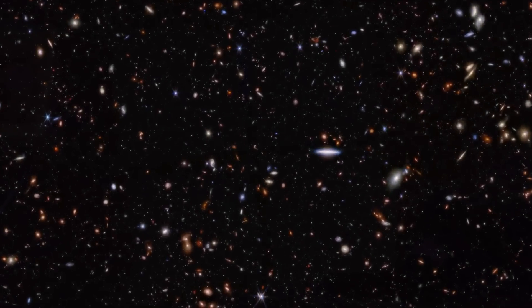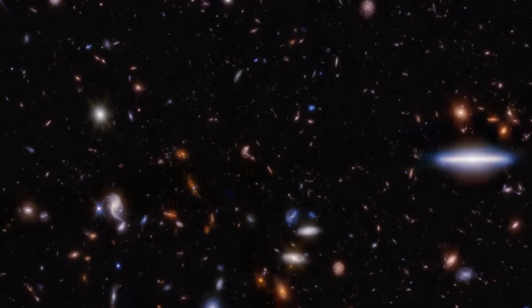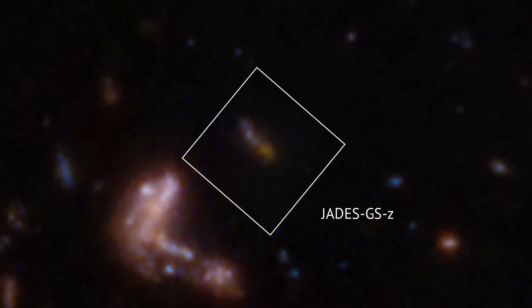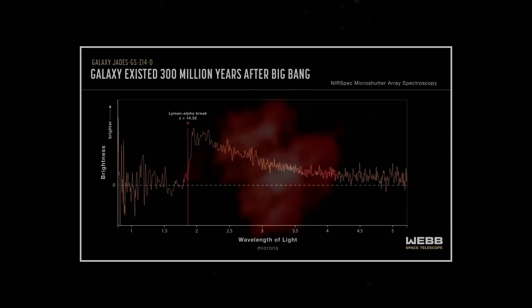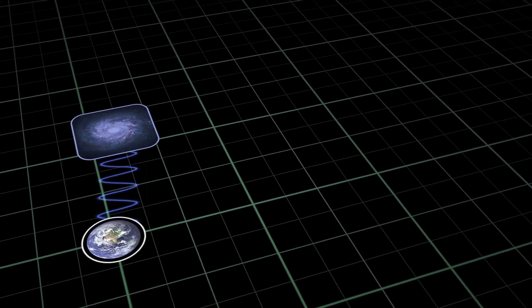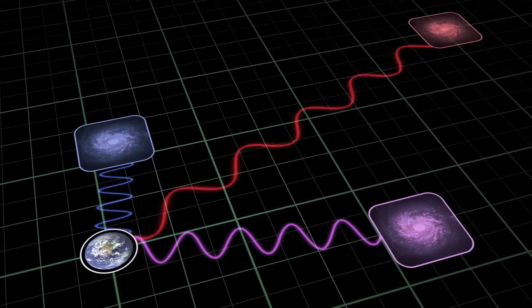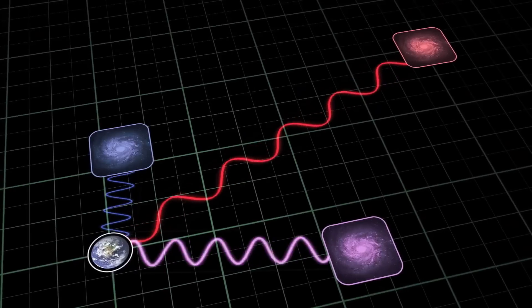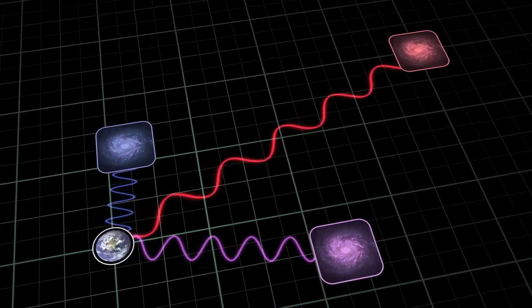In one of JWST's early campaigns, a galaxy named JADES-GS-z14-0 was found. It held the record for the most distant confirmed galaxy with a redshift of 14.32. Redshift, in a nutshell, is how much the light from a galaxy has been stretched by the expansion of the universe. The higher the redshift, the older the light.